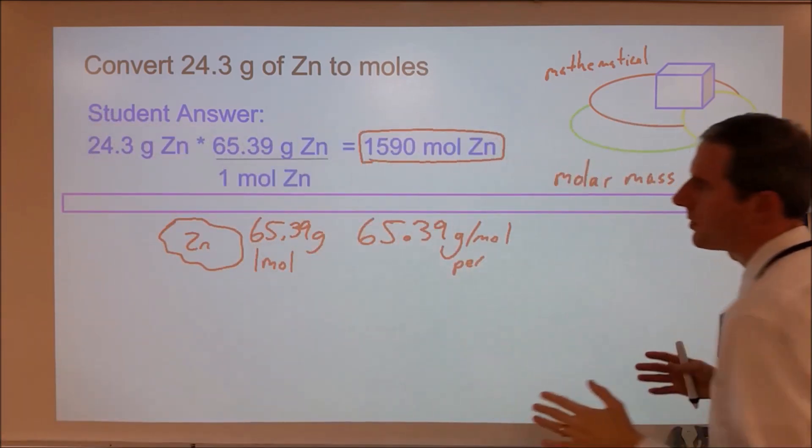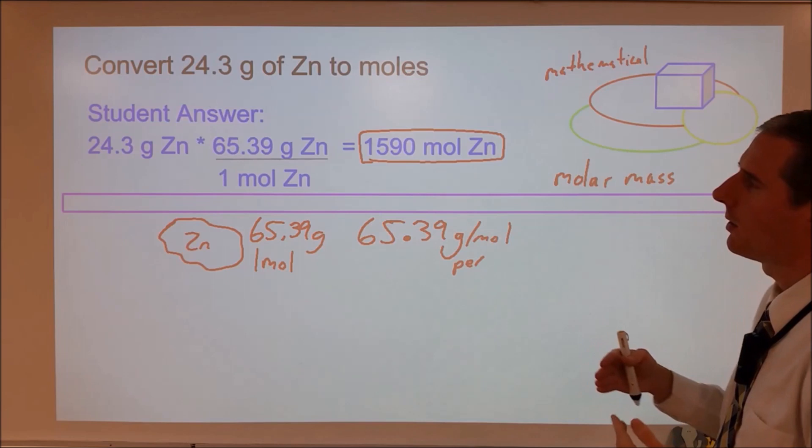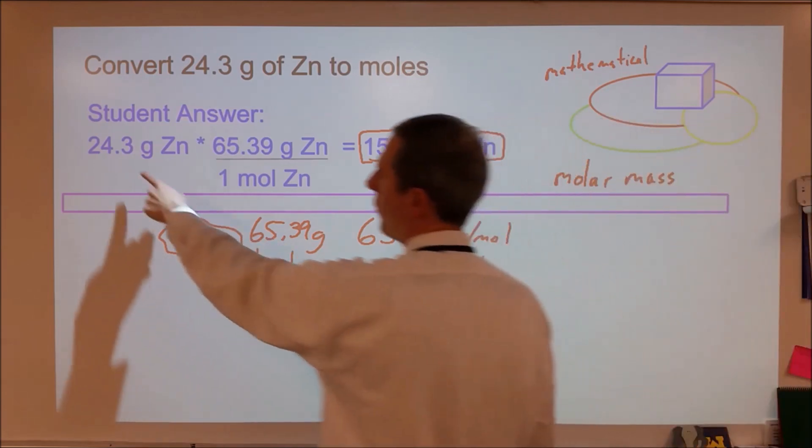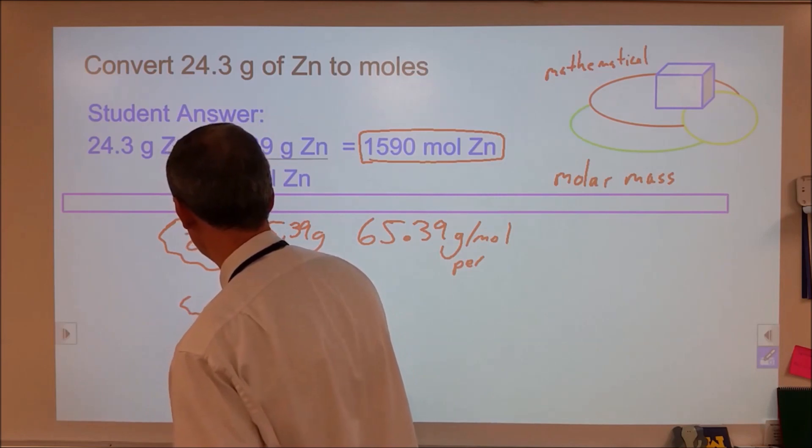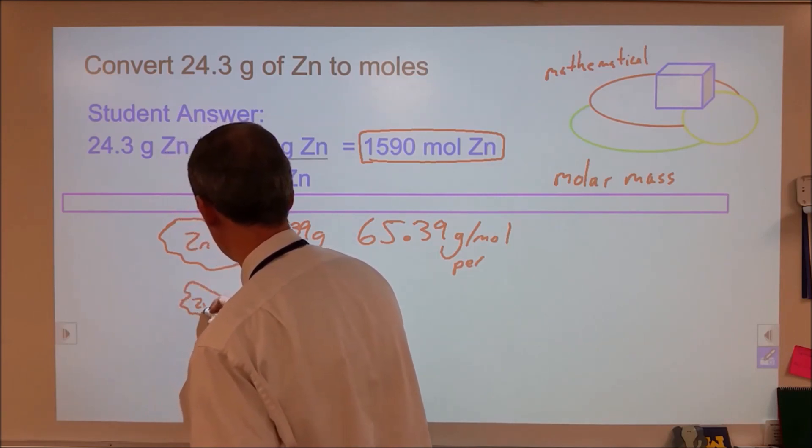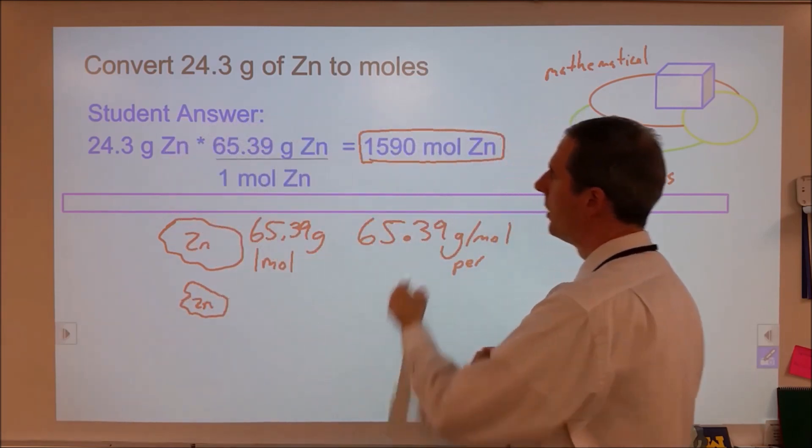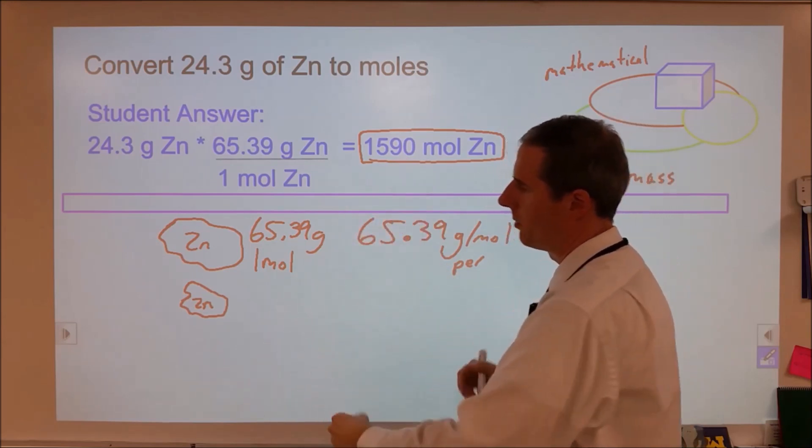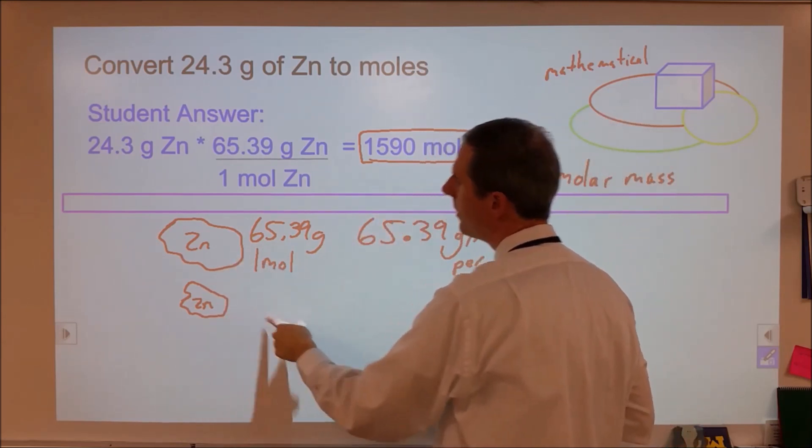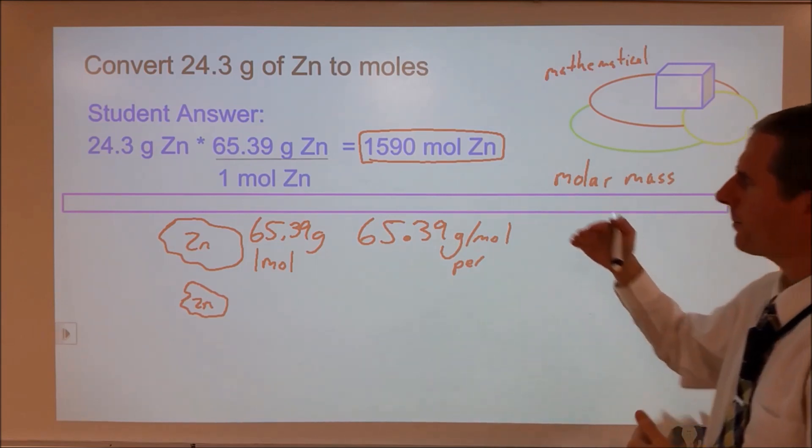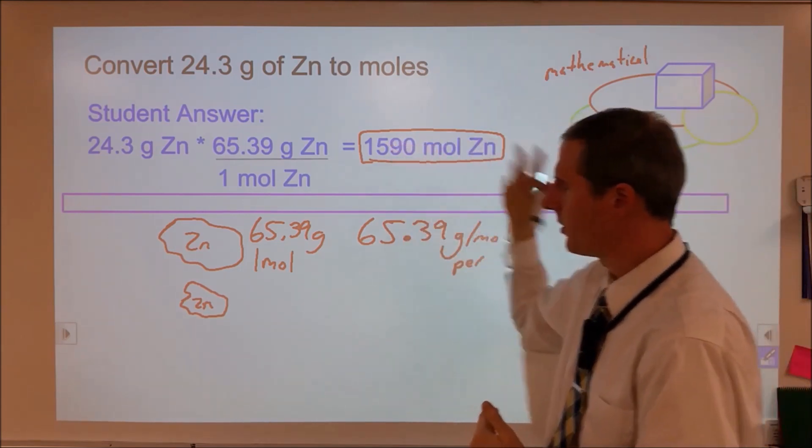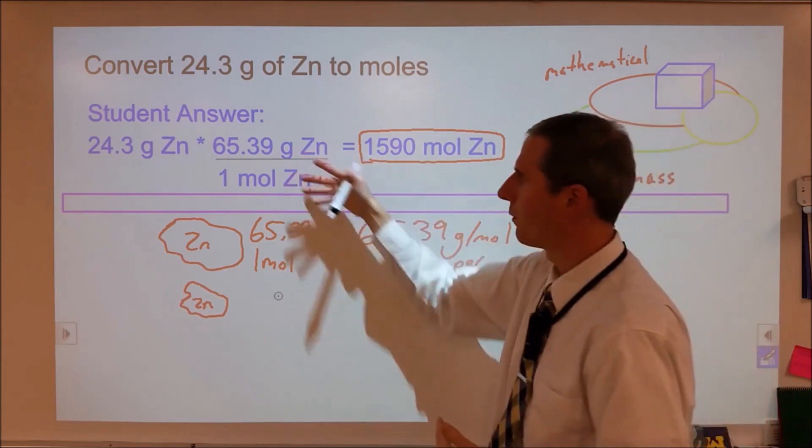Now what's critical for this is this student here has taken this answer and started with 24.3 grams, which is a little over a third of this. So they're looking at a really much smaller chunk of zinc. And then they're going, yep, I have 1600 moles. Well, if this is one mole, there's no way that this can be more than one mole, let alone 1600.